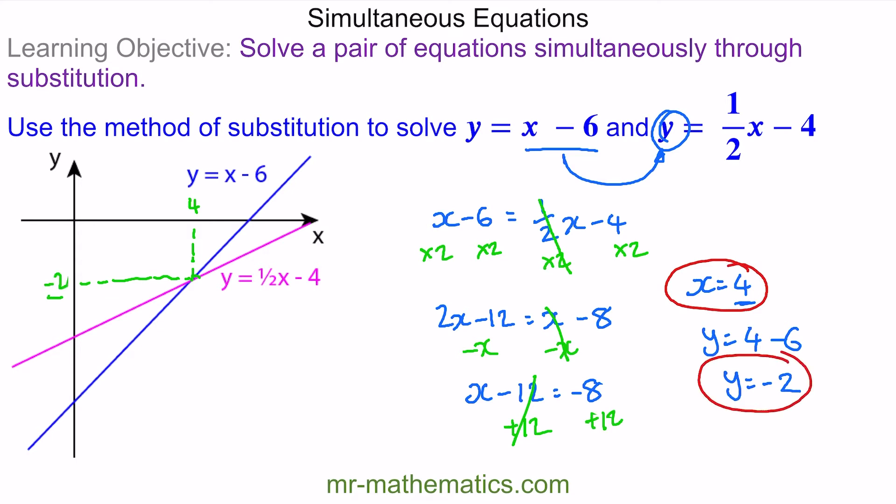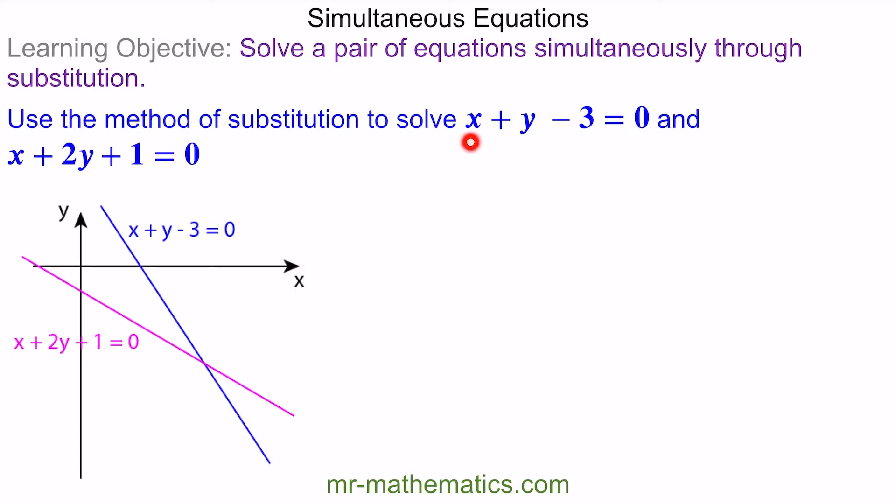Let's try another question. Now we have the equation x plus y minus 3 equals 0 and x plus 2y plus 1 is also 0. And we have the two graphs here. We're going to solve these by substitution.